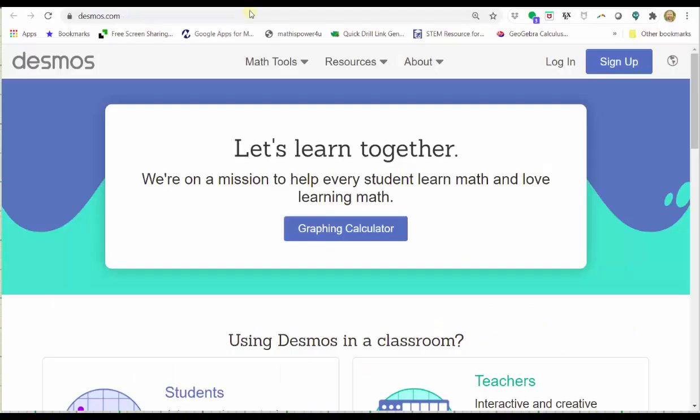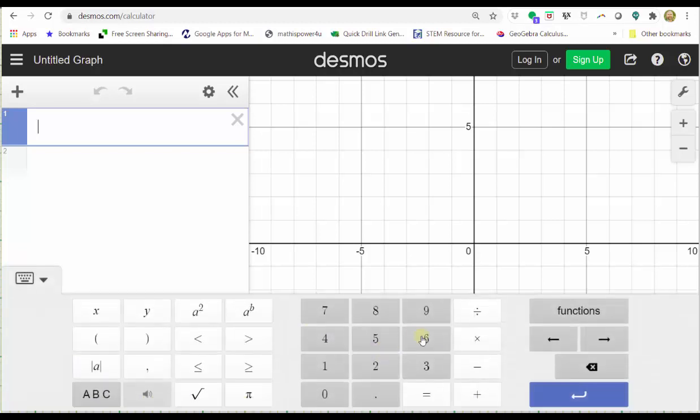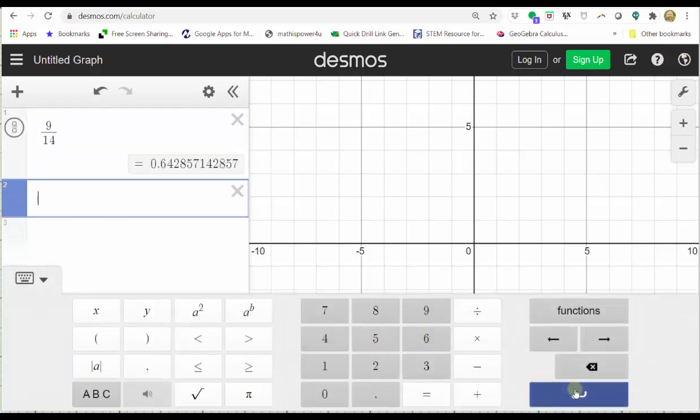After going to desmos.com, click graphing calculator. In cell one, enter nine divided by 14, enter. To four decimal places, we have 0.6429.